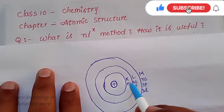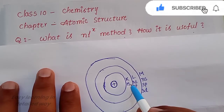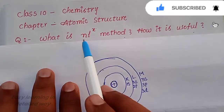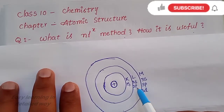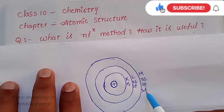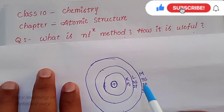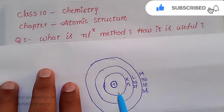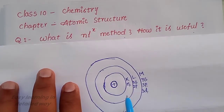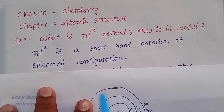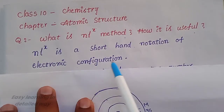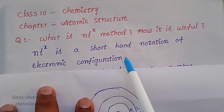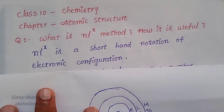All the electrons in an atom are distributed across orbitals. If we represent this method, we can see this shorthand notation. NLX is a shorthand notation of electronic configuration.